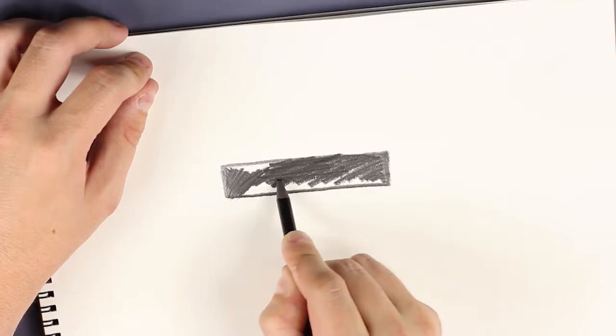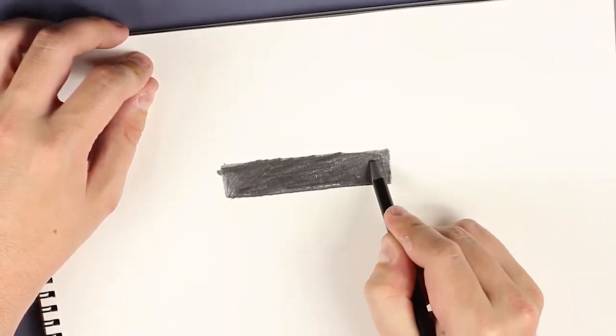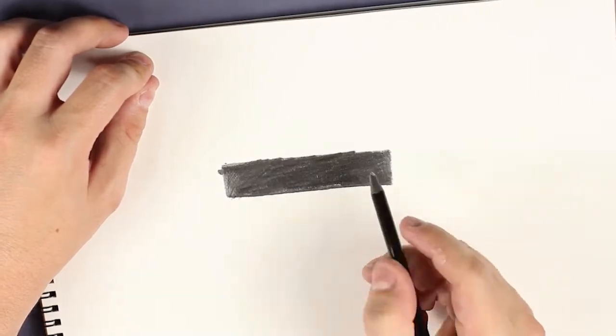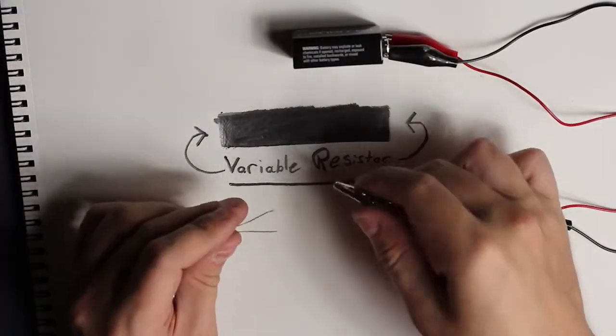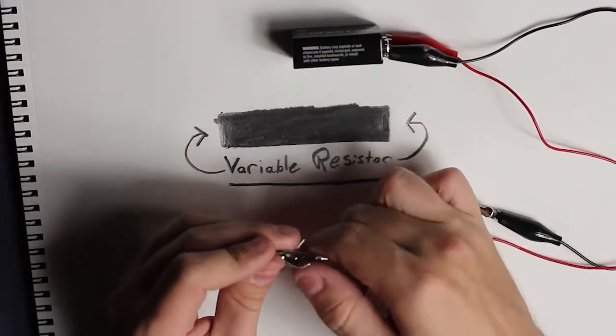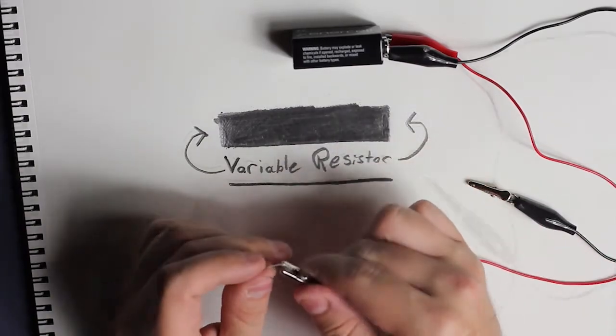If we draw out a nice thick line on some paper, the graphite in the pencil will actually work as a resistor. And as you may or may not know, a resistor basically restricts the flow of electrical current. Graphite itself is a pretty terrible conductor of electricity, but it will carry just enough to light up an LED when the source is a 9-volt battery.